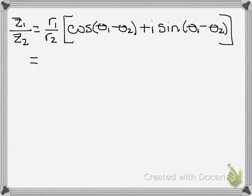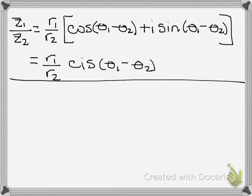If we put this in cis form, that would be r1 divided by r2, cis of theta1 minus theta2. Alright, so that's dividing. Let's do an example.